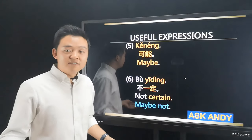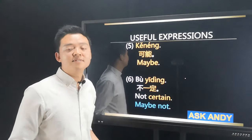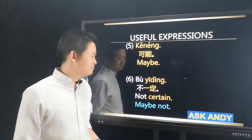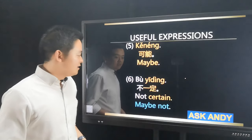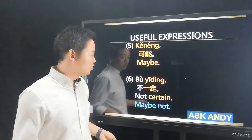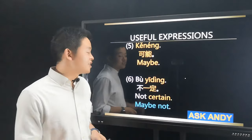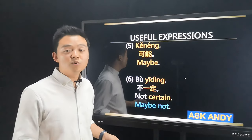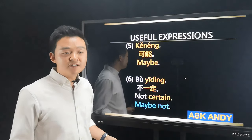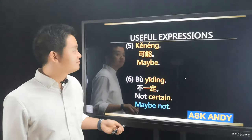Maybe in Chinese is 可能. And maybe not is 不一定 — which actually means 'not certain.' So 可能 for maybe, and 不一定 for maybe not.